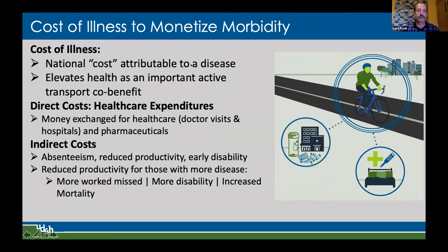Cost of illness is the national cost attributable to a disease and elevates health as an important active transportation co-benefit. Direct costs are healthcare expenditures — money exchanged for healthcare. Indirect costs include employee absenteeism, reduced workforce productivity from illness, and early disability. Research with COVID showed that having a chronic disease and then getting exposed to COVID came with much worse severity and mortality. So having more disease means more work missed, more disability, and increased mortality.